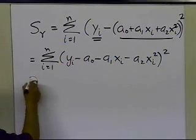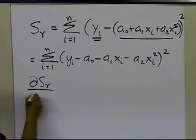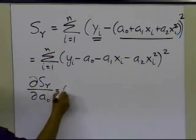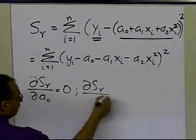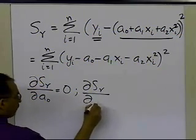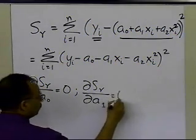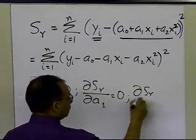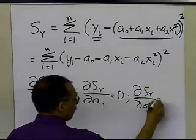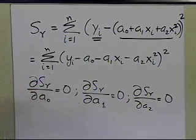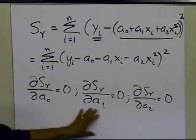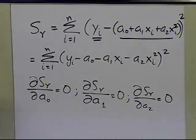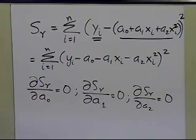These three equations give me three equations and three unknowns, so I should be able to solve for a0, a1, and a2. Keep in mind this only gives a local maxima or minima — I won't show the proof for why the resulting values correspond to a local minimum, as that's beyond the scope of this course.